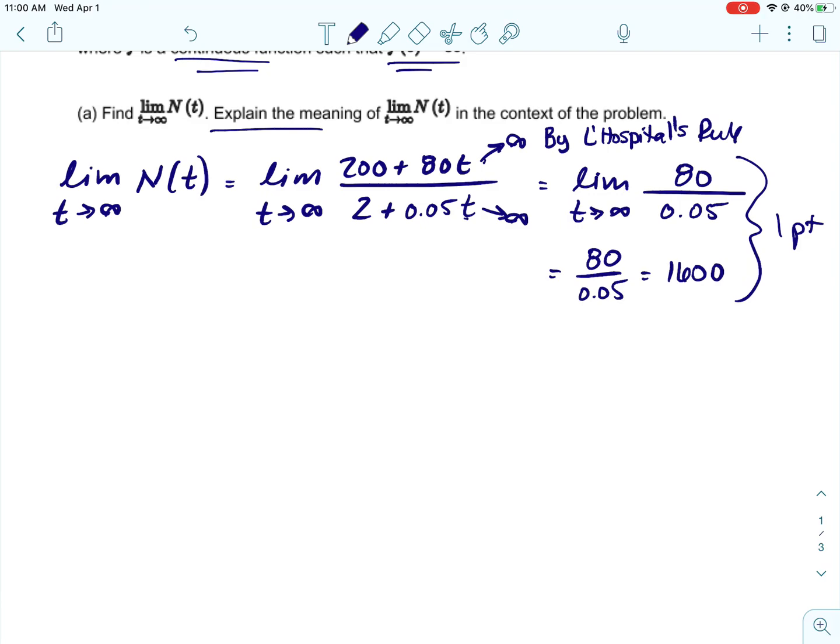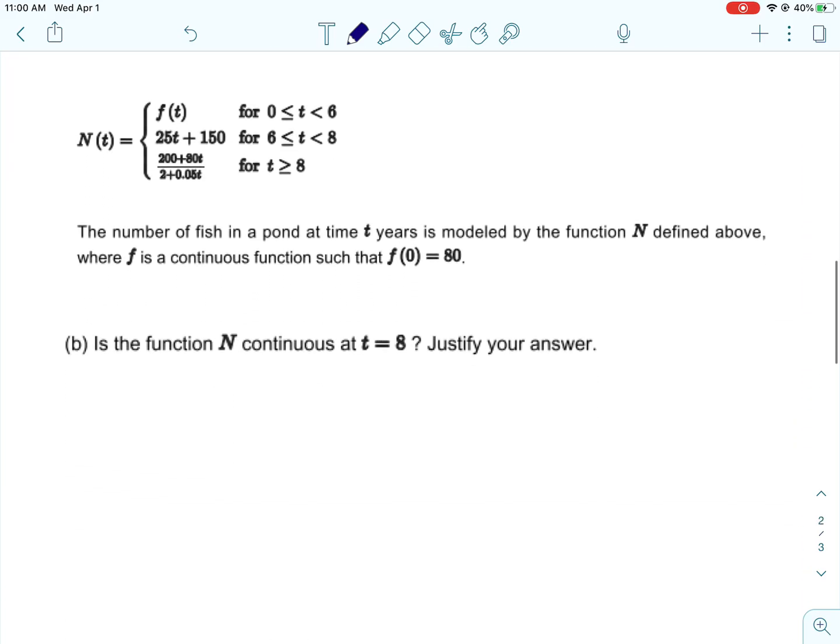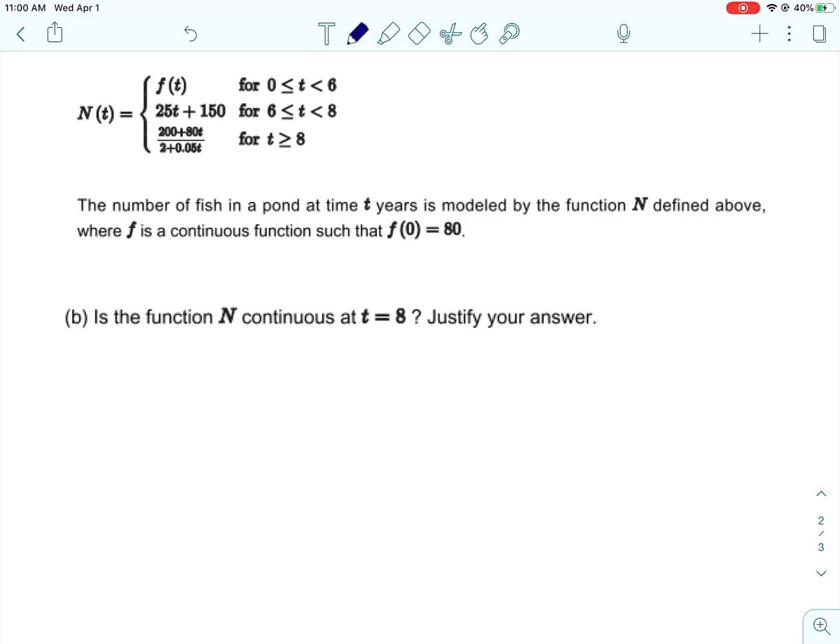That gives you one point, getting that 1600. The other point comes from explaining the meaning. So what's happening is t is approaching infinity, so the time is getting bigger and bigger, and 1600 is the number of fish. In other words, you would say as time increases, the number of fish approaches 1600.